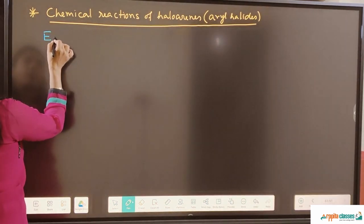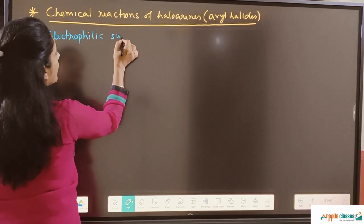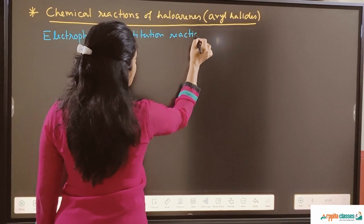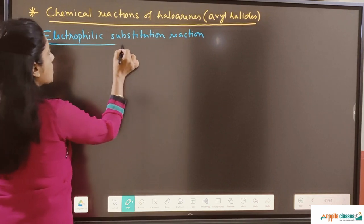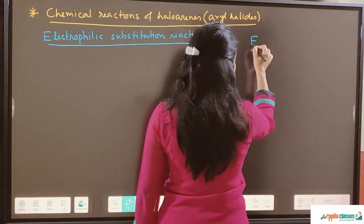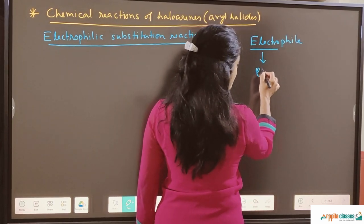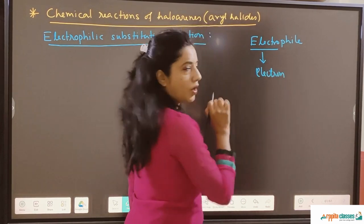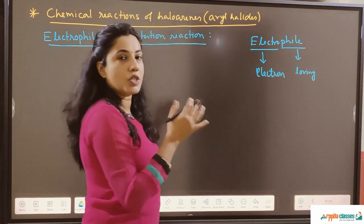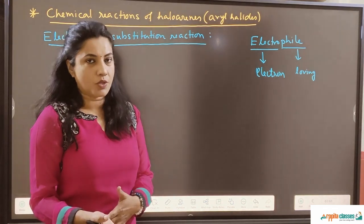We are talking about electrophilic substitution reaction, where the substitution will be taking place by an electrophile. The name itself tells us: electro means electron, and phile means loving. So any species which is electron-loving will be a positively charged or electron-deficient species. They are called electrophiles.